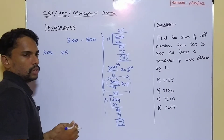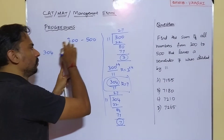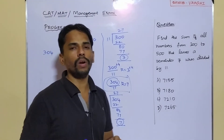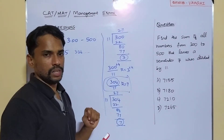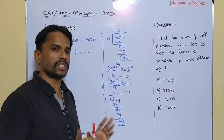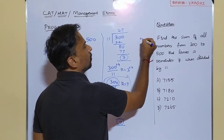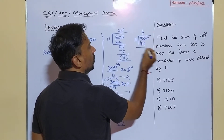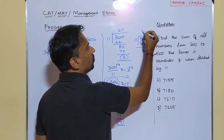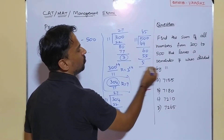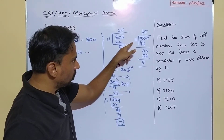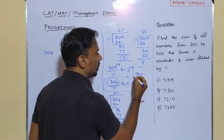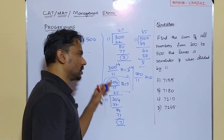So 304 is the first term, next is 315, then 326, and so on. Now to find the last number satisfying this condition that is just less than 500, I'll take 500 and divide it by 11. Dividing: 11 times 4 is 44, balance 60; 11 times 5 is 55, leaving remainder 5. So 500 divided by 11 gives remainder 5.